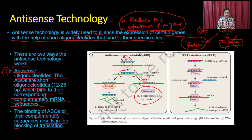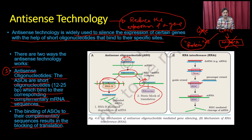The other approach: whenever you have a double-stranded RNA, it is targeted by an enzyme called RNase H, which degrades the messenger RNA into multiple pieces, also reducing protein synthesis from that messenger RNA.